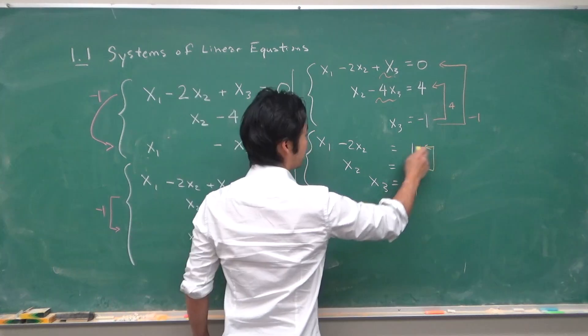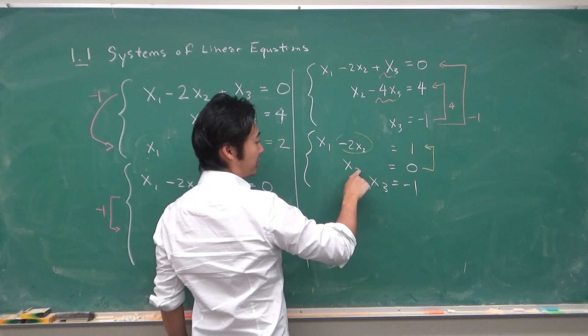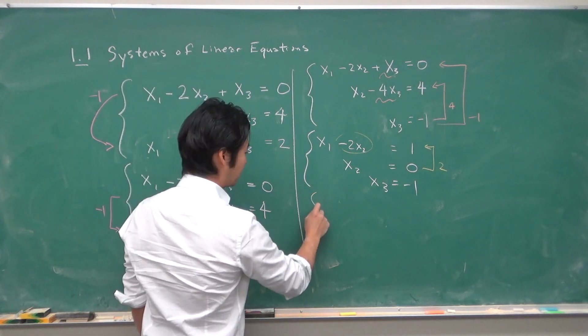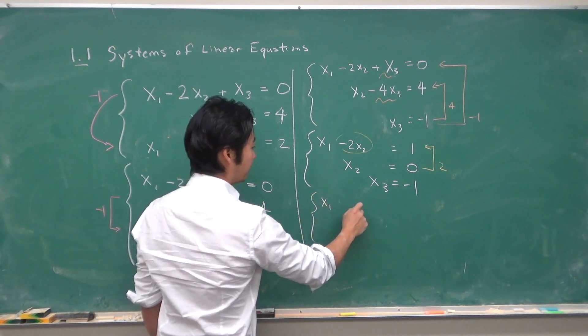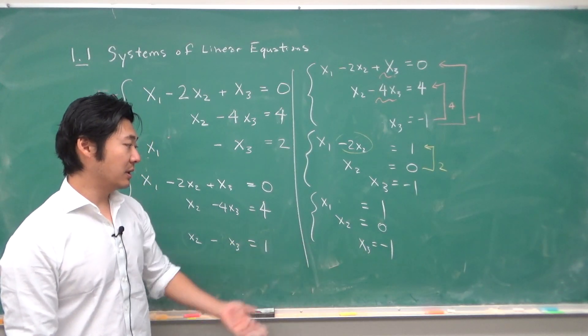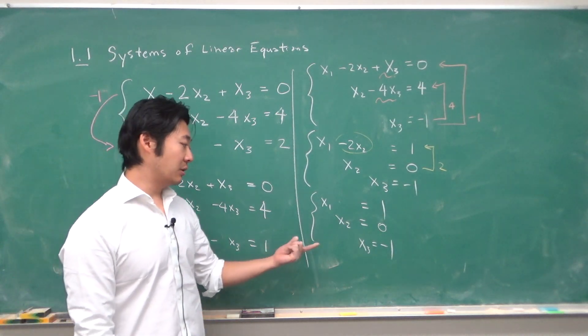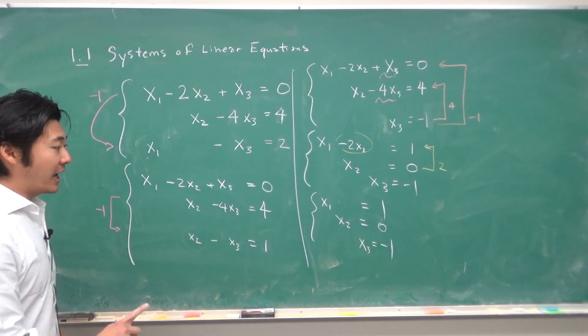And then we go once more. To get rid of this variable we can multiply this by 2 and add it in. So this will be x1 is 1. So we get x1 equals 1, x2 equals 0, x3 equals negative 1. And so that is our solution.